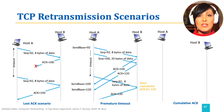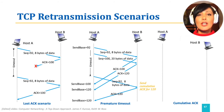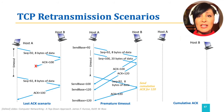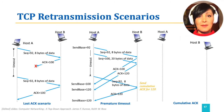And host A sends it again. At the receiver, because host B has already received all bytes up to 120, it will ACK 120. And that would be the cumulative ACK to host A.